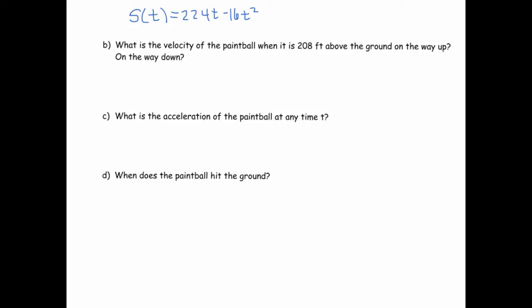Let's continue on with this example. We're next asked to find the velocity of the paintball when it's 208 feet above the ground on the way up, and then also on the way down. So the first thing we'll want to do is find out the time at which this ball is 208 feet above the ground. And so we can set our position function equal to 208 and solve for time. And then what we'll do is we'll plug that time value into our velocity function.